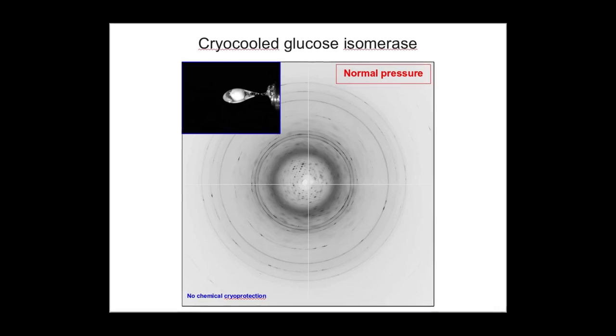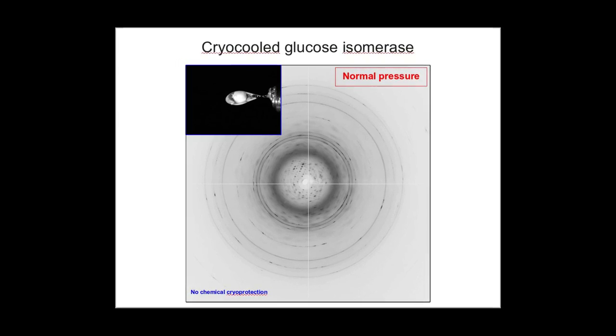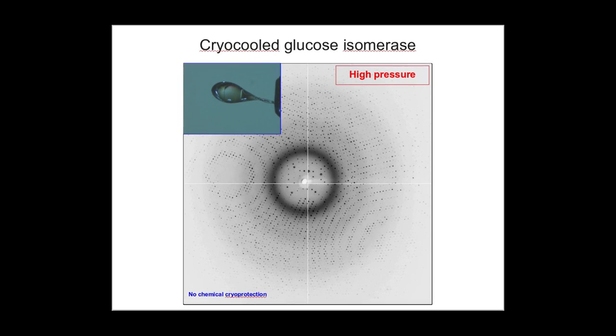Sometimes, however, you're also interested in understanding the effect of pressure on the proteins themselves. So, for example, there are organisms at the bottom of the ocean that are under high pressure. We know that they work very differently under high pressure than atmospheric pressure. And this is a mechanism of preserving the pressure changes so that you can look at them with x-ray diffraction.